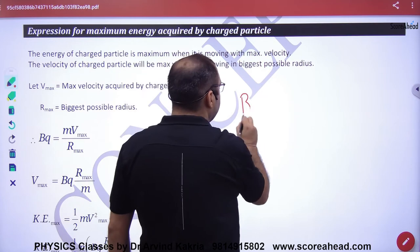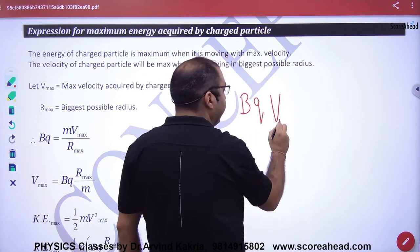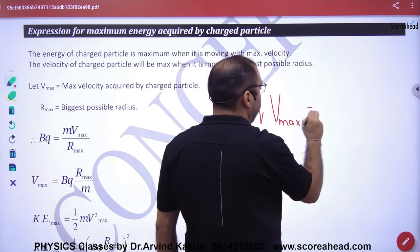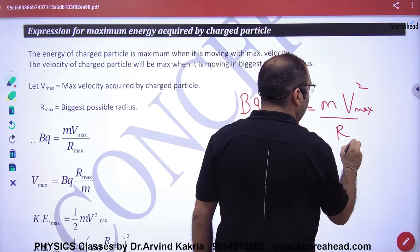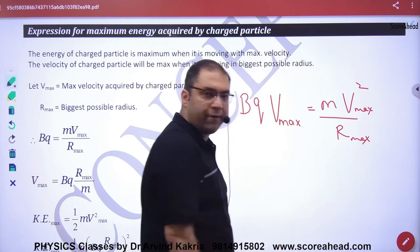So what I told you, that Bq, what will be in the last round, maximum is mv² by r. Now r will be max and velocity will be max. Point clear?